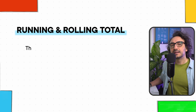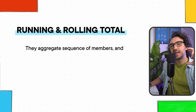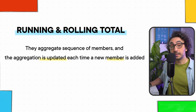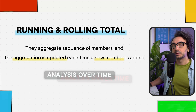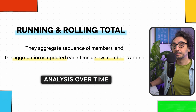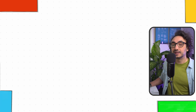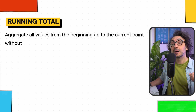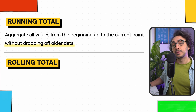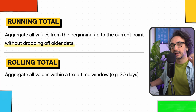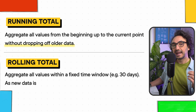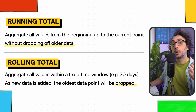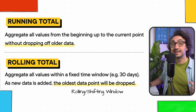Now the question is: what are running and rolling totals? They are basically very similar — they both aggregate a sequence of members, and the aggregation gets updated each time we add a new member to the sequence. A sequence could be a time sequence, which is why we call this type of analysis 'over time.' The difference: the running total aggregates everything from the beginning until the current data point without dropping off any old data. The rolling total, on the other hand, focuses on a specific time window like the last 30 days or last two months, and each time we add a new data point we drop off the oldest one — creating a shifting window effect.